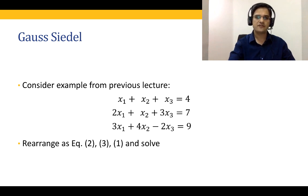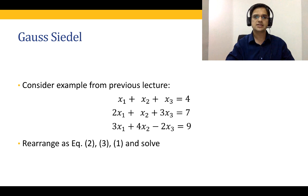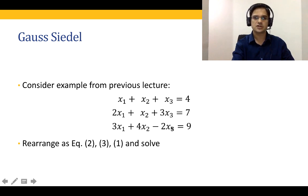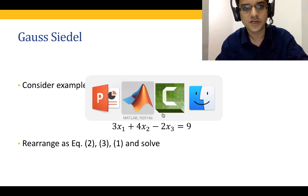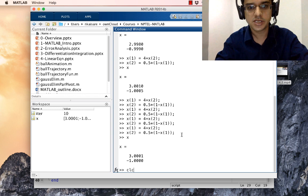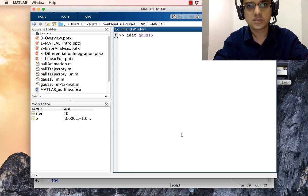Now let us consider the example from the previous lecture: three equations in three unknowns. To make the system diagonally dominant, we rearrange the equations — the first equation becomes what was previously the second, the second becomes what had the largest diagonal coefficient (the value 4), and the third equation takes the remaining one. So the new ordering is row 2, row 3, row 1. Let's open the MATLAB editor and write a Gauss-Seidel function.